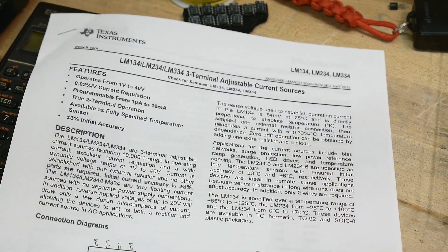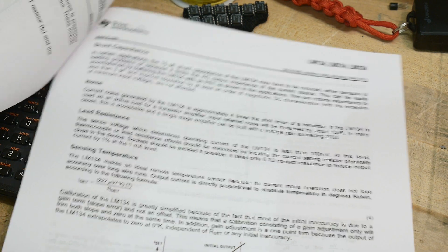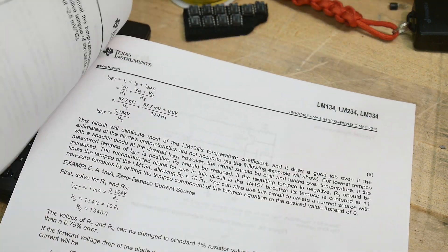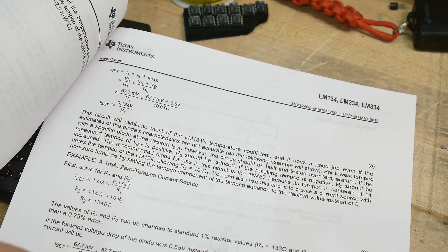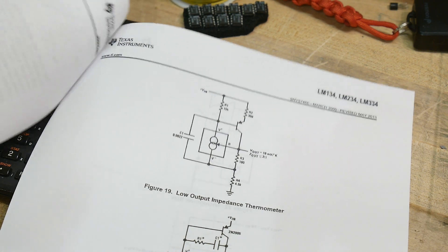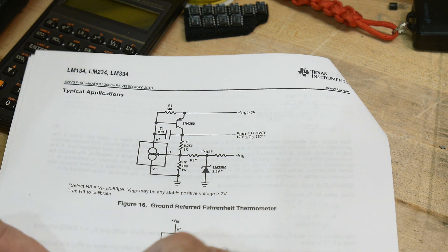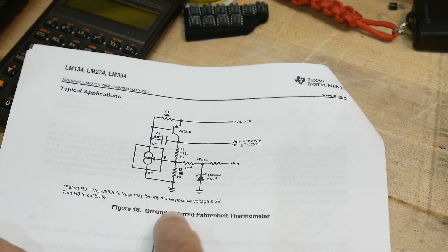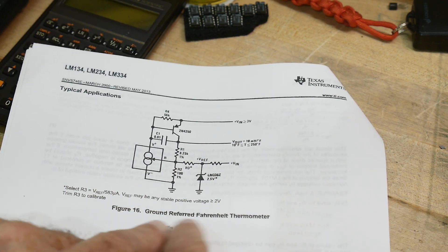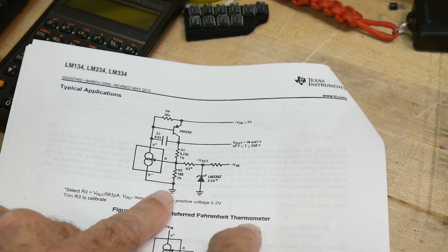Data sheets often have application notes in the back. So, this kind of answers the question of those people who have been commenting. Oh, it's a new part. Great. That's great. But how do you use it? Right? Well, you go to the app note and you, or the data sheet or app note, and you see how it's used.